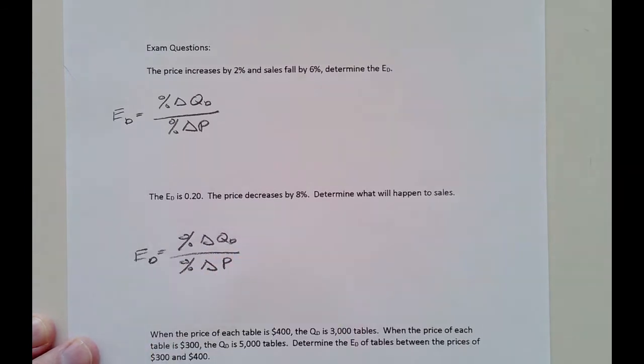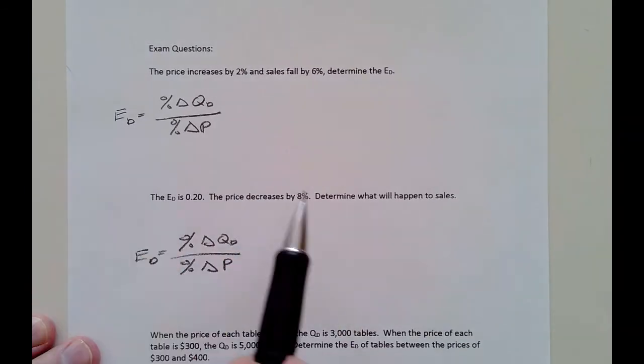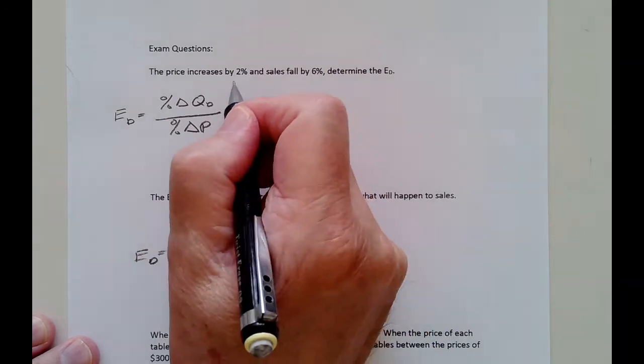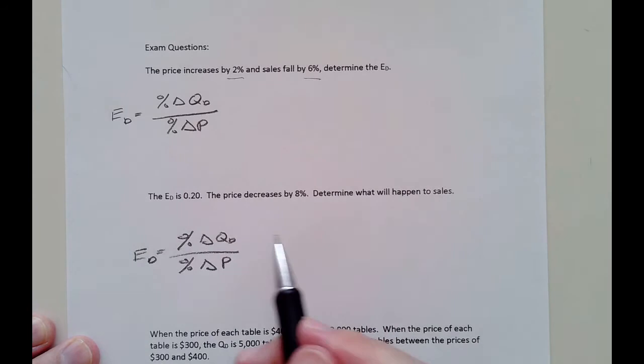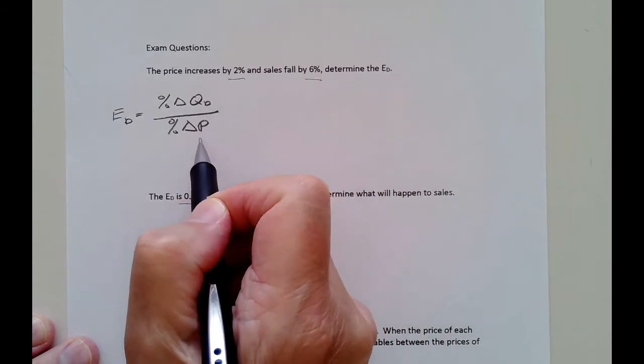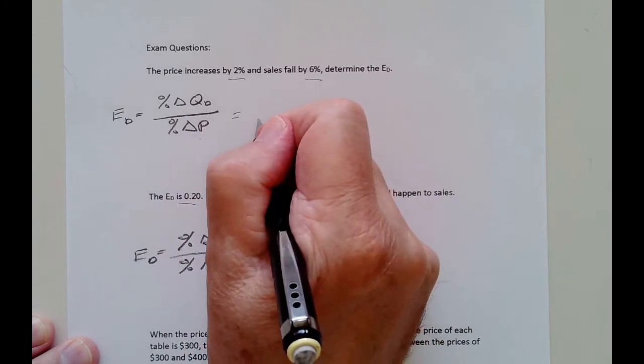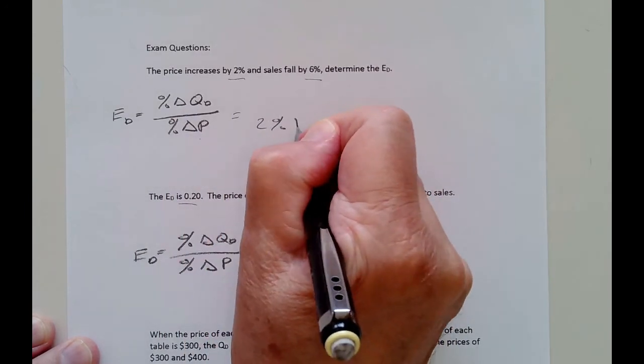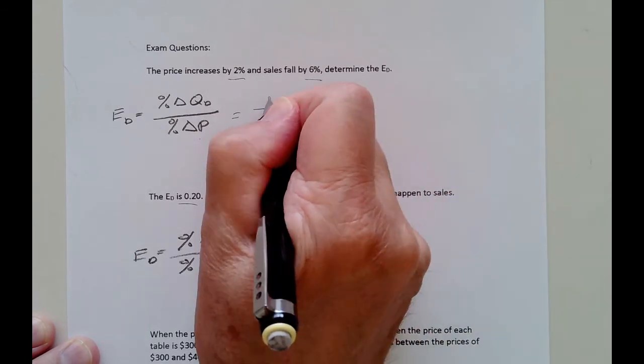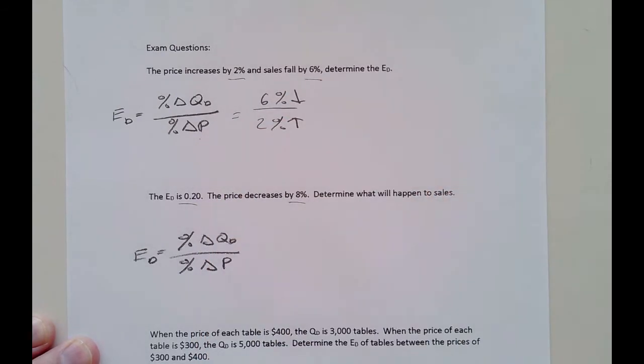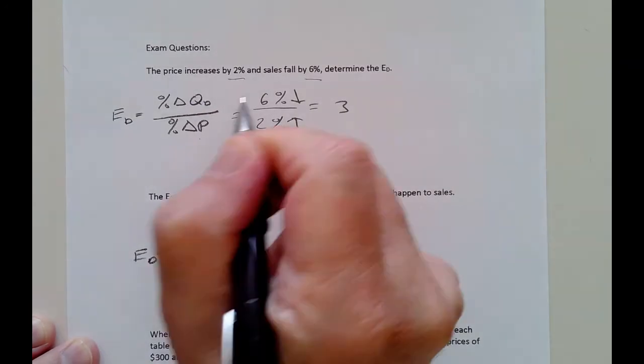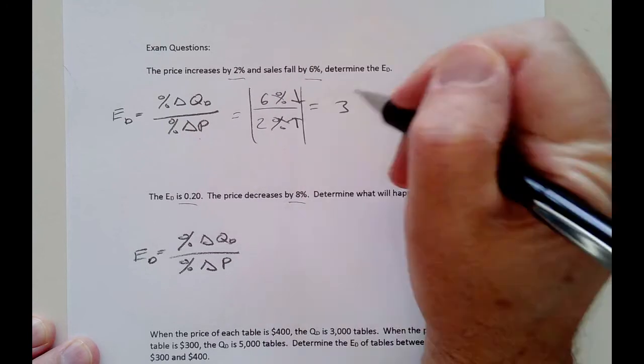We have three pieces of information: the elasticity number, the percent change in quantity demanded, and percent change in price. Up here, I gave you two of the three pieces in both cases. Here, I don't give you the elasticity number, but I gave you the percent change in the price, which is 2%. So if price increases by 2%, right there, then sales fall by 6%, determine the elasticity of demand. 6% right there. So 6 divided by 2 is 3.